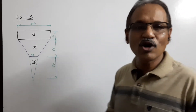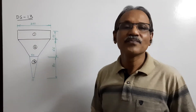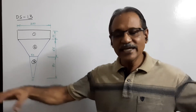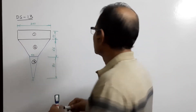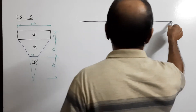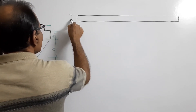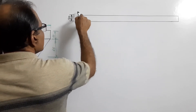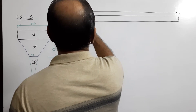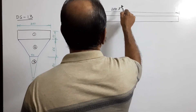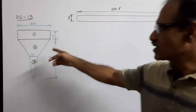The development of the first part — the cylinder — is simply a long rectangular sheet. Its length is πd, where d is 200 mm, so the length is 200π. The height of the rectangle is 50 mm. You draw a rectangle and mark these dimensions: height 50 mm and length πd.